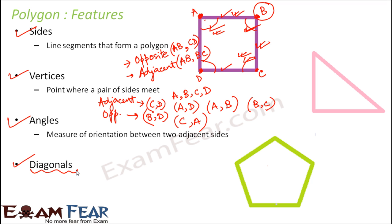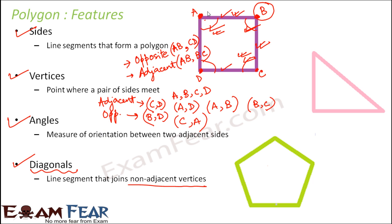The fourth feature is diagonals. Diagonals are the line segments that join non-adjacent vertices, which are basically the opposite vertices. In polygon ABCD, A and C are opposite vertices, so the line joining A and C is a diagonal. Similarly, the line joining B and D is also a diagonal. This polygon with four sides can have only two diagonals, because there are only two pairs of non-adjacent vertices.